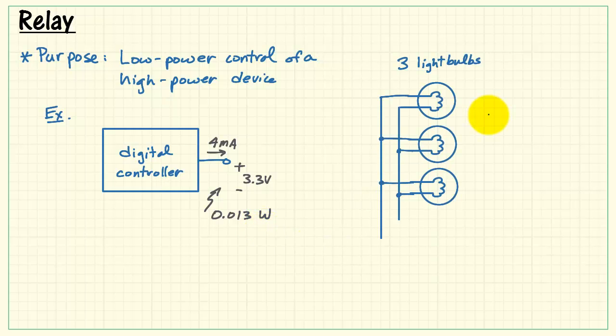Now, suppose we wanted to have digital control over three light bulbs, each of which is plugged into the 120 volt mains, and each of which has a power level of 120 watts.